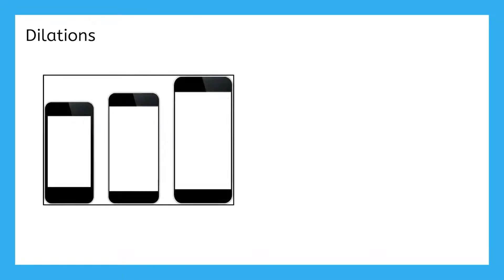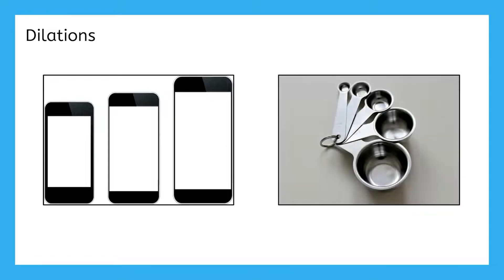Let's begin with some examples of dilations in real life. We can compare older phones to the newer models to see a dilation, since most new models are bigger than the originals but still kind of the same shape. Another example that you may have in your own kitchen is measuring cups or measuring spoons. The bottom spoon is the biggest and the other spoons all still have the same circular shape, but they're smaller. These are both examples of dilations because the shape is being resized.